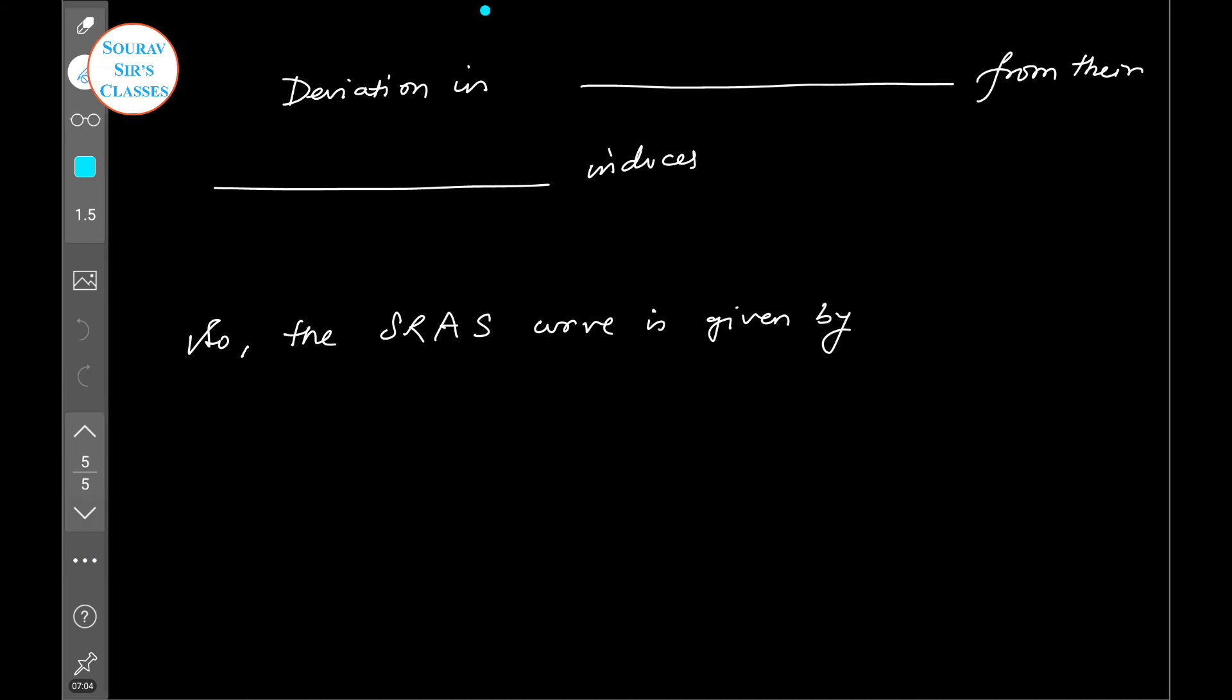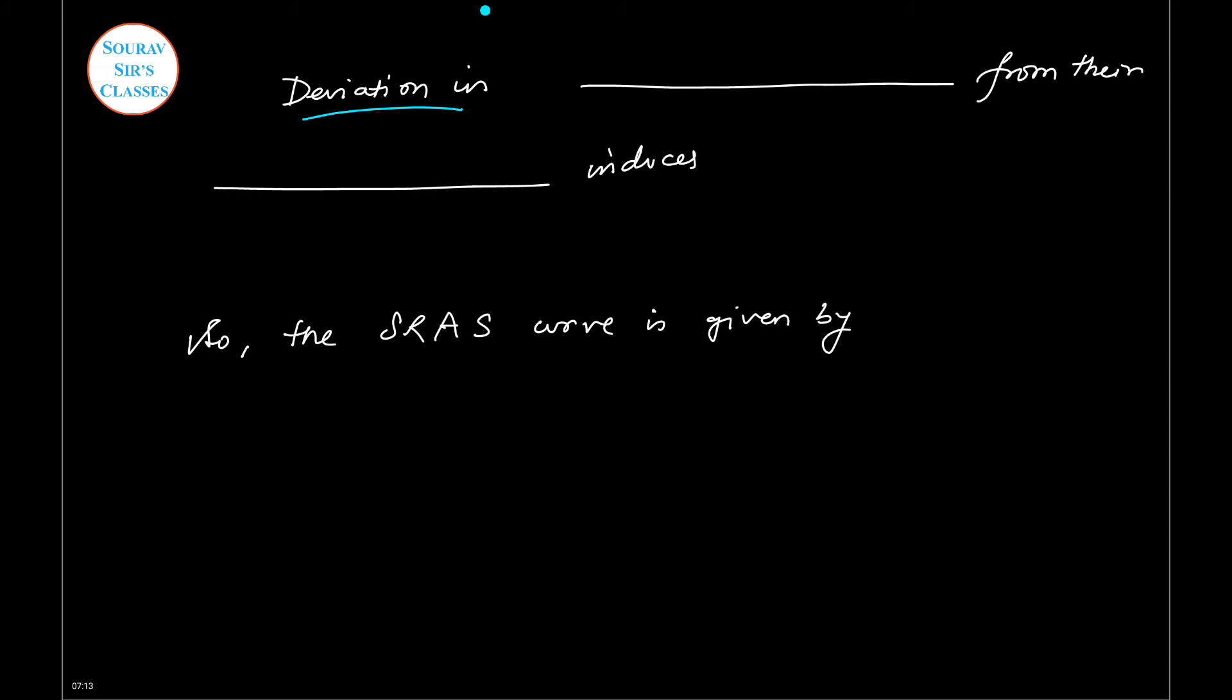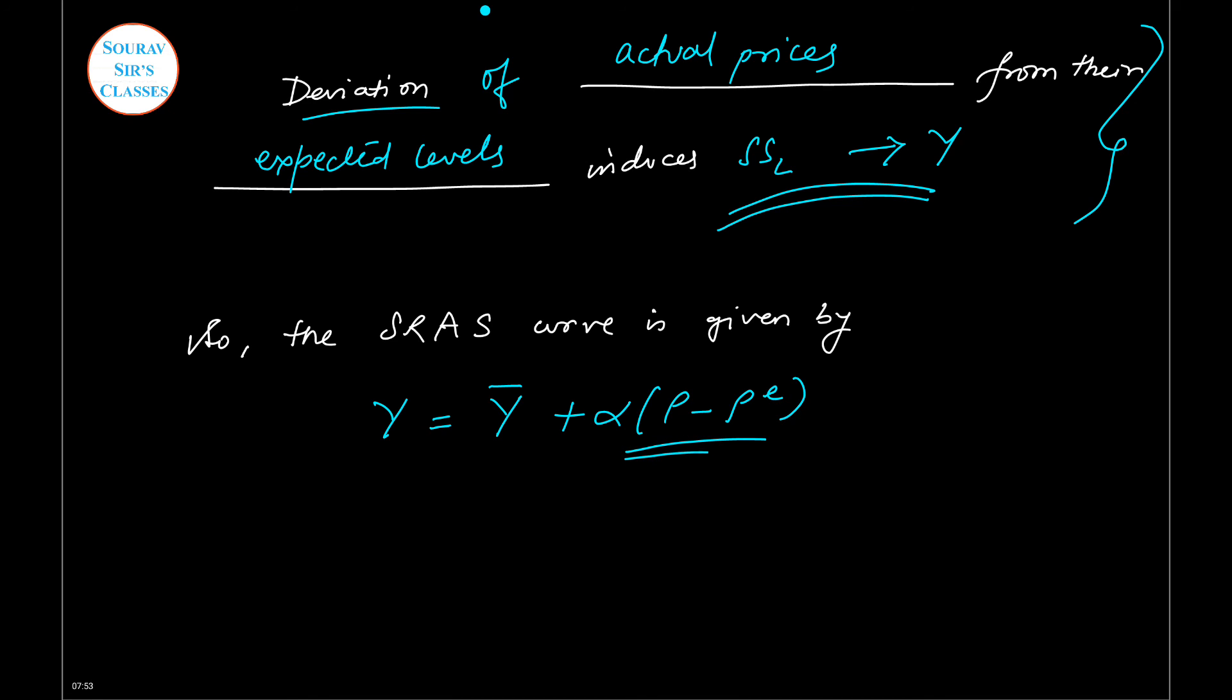Now if we want to interpret this result in terms of the short-run aggregate supply, a deviation of actual prices from their expected levels will induce the supply of labor. This will in turn alter the output level in the economy. So if we write this in one line, it means that Y will not equal Y-bar if P minus PE is not equal to zero. That means if there is deviation of actual prices from expected level, then Y will never equal Y-bar. And this is nothing but our equation for the short-run aggregate supply curve.